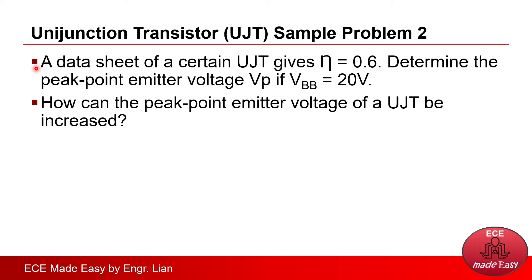Determine the peak point emitter voltage Vp if VBB is equals to 20 volts. And another question here, how can the peak point emitter voltage of a UJT can be increased?